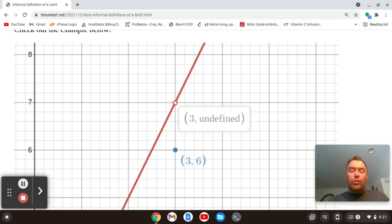But the limit of f of x as x approaches 3 is going to be 7, because the left-hand side here and the right-hand side here are both approaching 7 as x approaches 3.